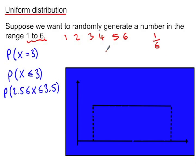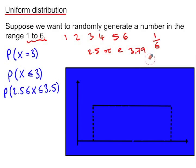But in this case, we're not just talking about whole numbers. We're saying any number in the range 1 to 6 — so it could be 2.5, it could be pi, it could be e, it could be 3.79. There's actually an infinite number of possibilities here. So the probability that x equals 3 is, in fact, 0. It's so unlikely that the probability of choosing any one particular number from 1 to 6 is 0.